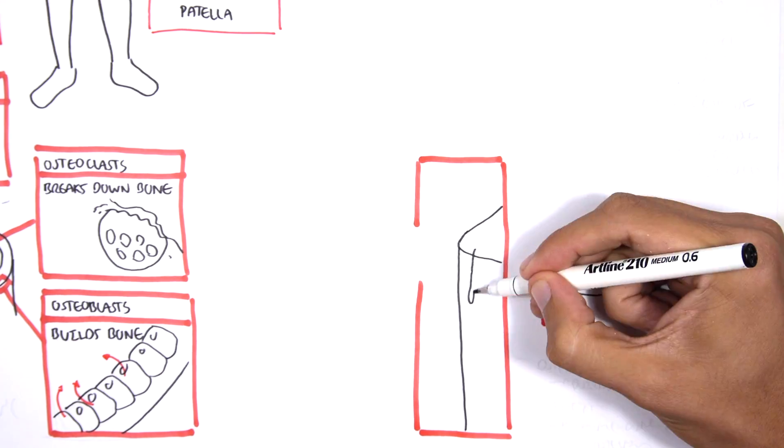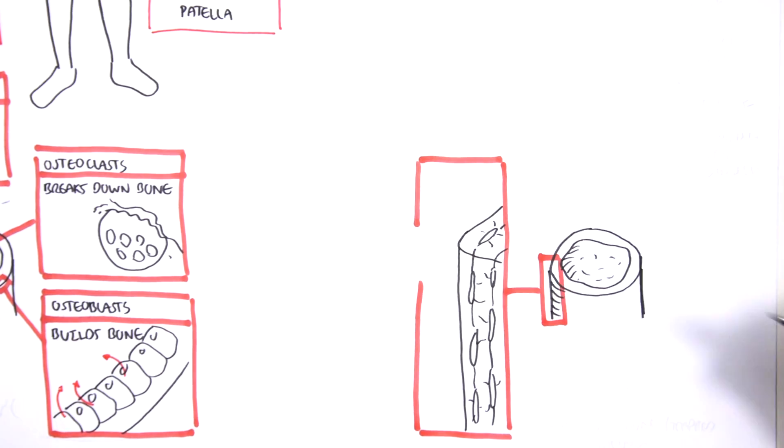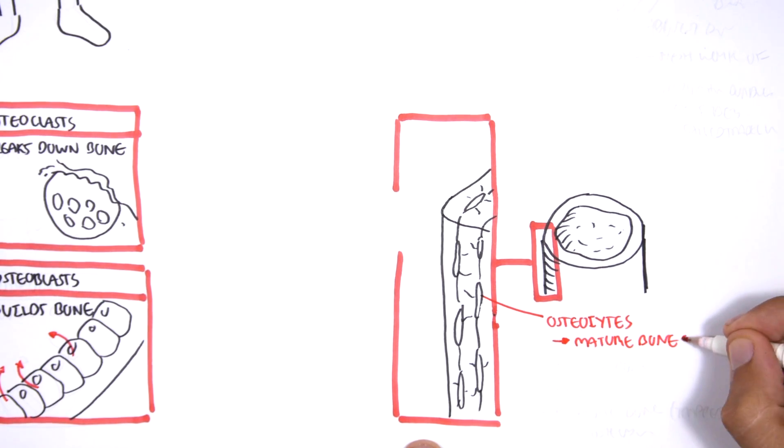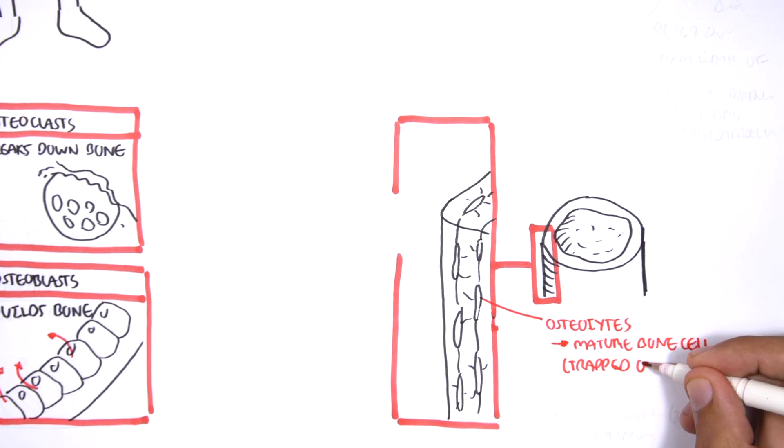Looking at compact bone here, we have osteocytes, which are the mature bone cells. Remember, they become osteocytes when the osteoblasts are trapped within the matrix.